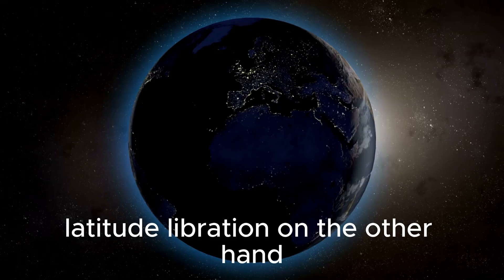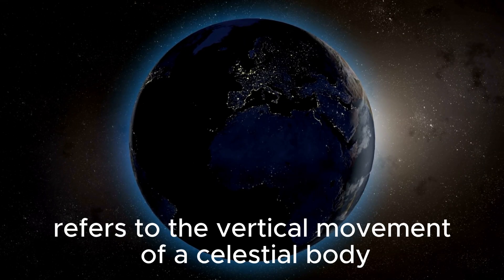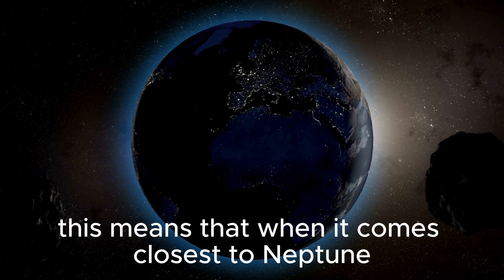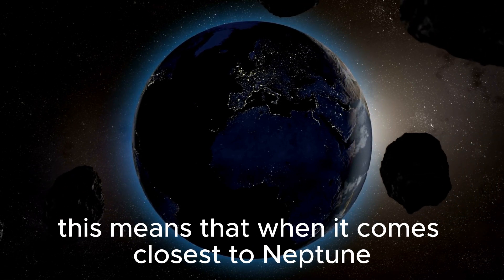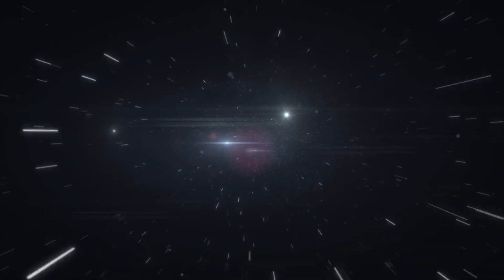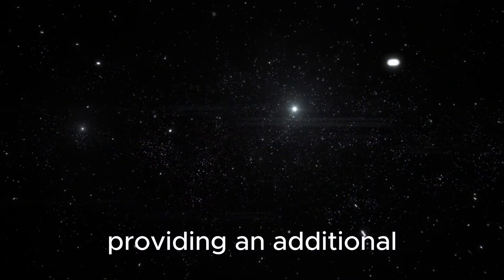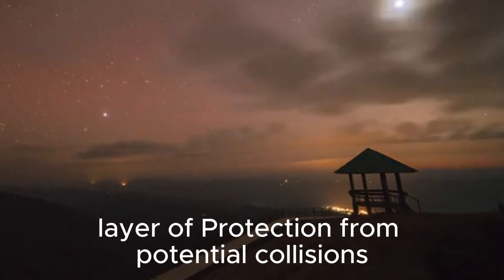Latitude libration, on the other hand, refers to the vertical movement of a celestial body in its orbit. For Pluto, this means that when it comes closest to Neptune or any other giant planet, it's situated significantly above their orbital plane, providing an additional layer of protection from potential collisions.